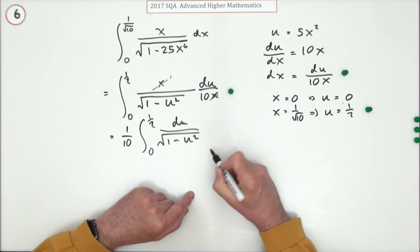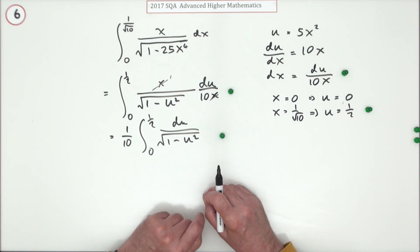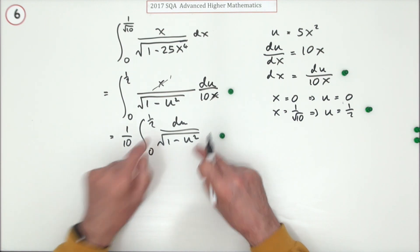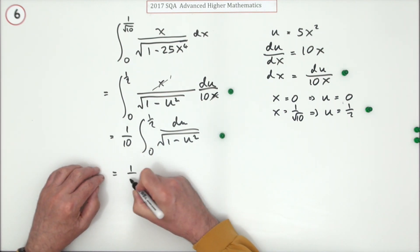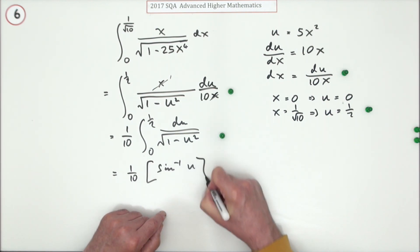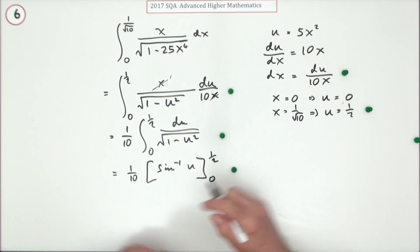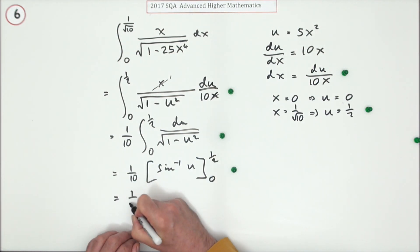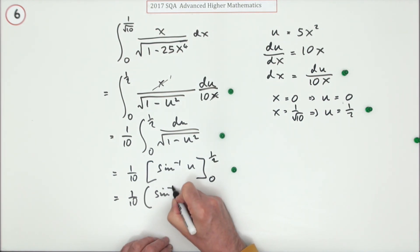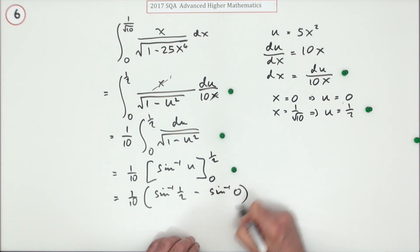That will just be du over the square root of one minus u squared — which gets the next mark. And of course when you're down to there, you're down to a pattern you recognize: that's inverse sine. So you've got one tenth of inverse sine of u from zero to a half, worth the next mark. Evaluating gives a tenth of inverse sine of a half minus inverse sine of zero.